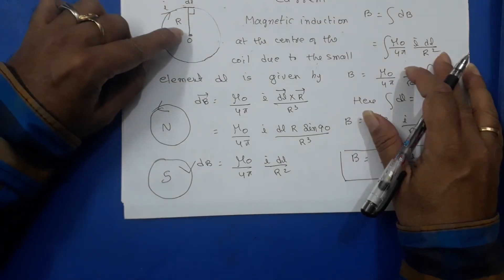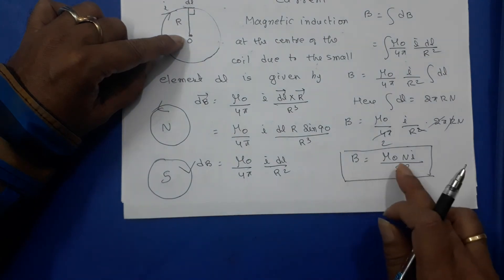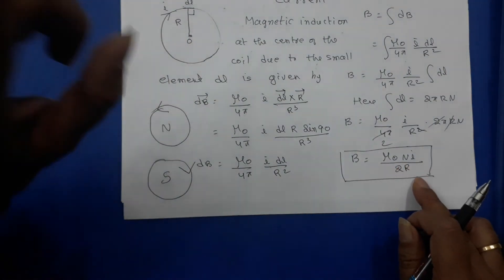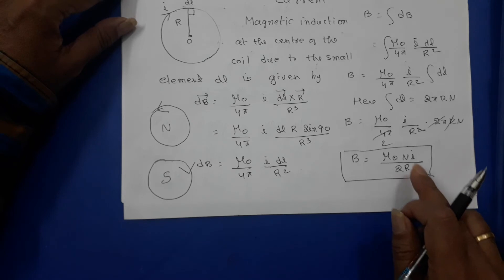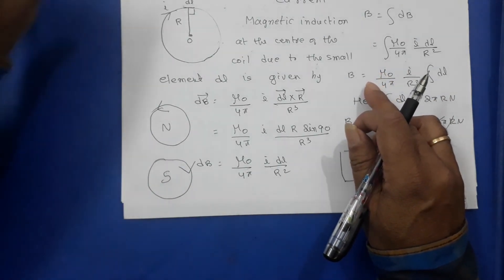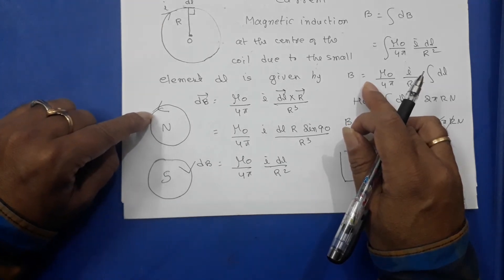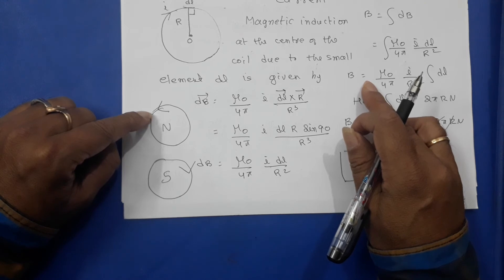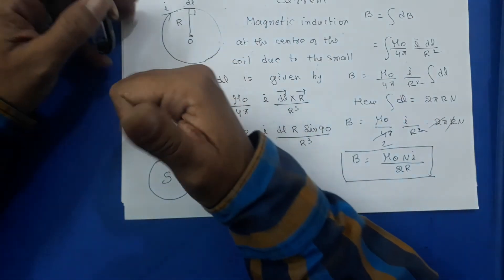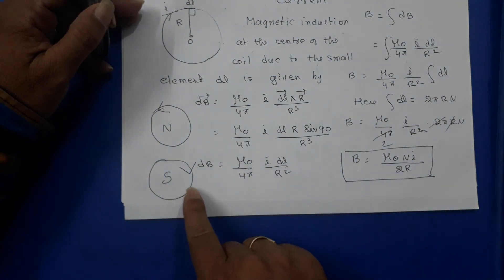So you can find the magnetic induction at the center of the current-carrying coil using the Biot-Savart law. At the center, B = μ₀NI / 2R. The B direction is normal to the page — either into the page or out of the page depending on the direction of current. If the current is anti-clockwise, B is out of the page and the loop behaves like a north pole. If the current is clockwise, the loop behaves like a south pole.